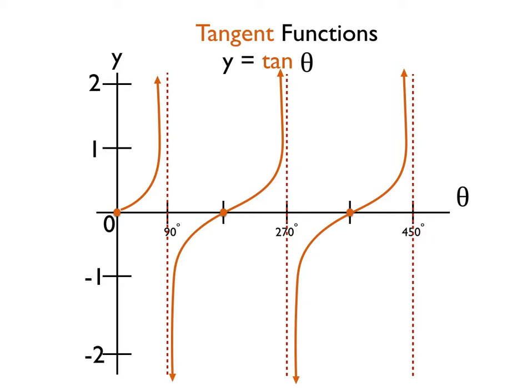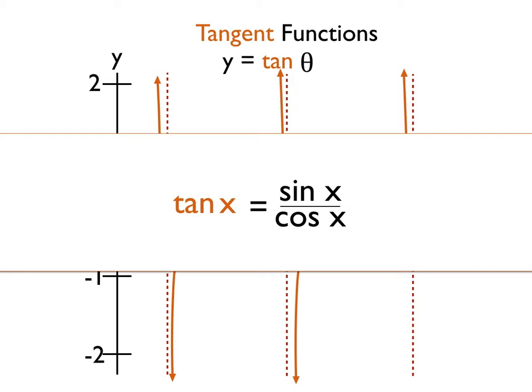This is what the tangent function would look like once it's all said and done. So let's take a look at how we end up with this product. Once again, this is the parent function, sine x over cosine x.